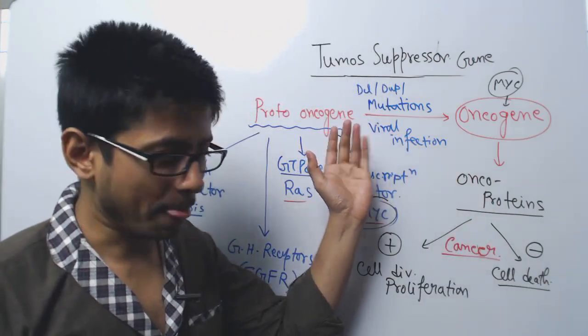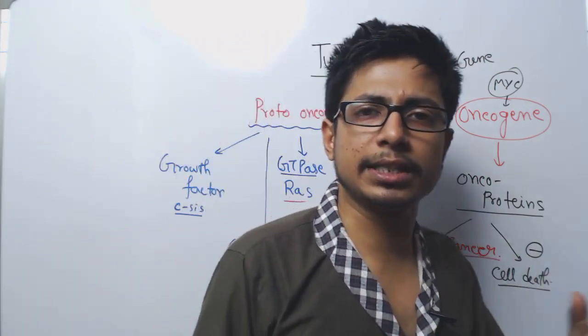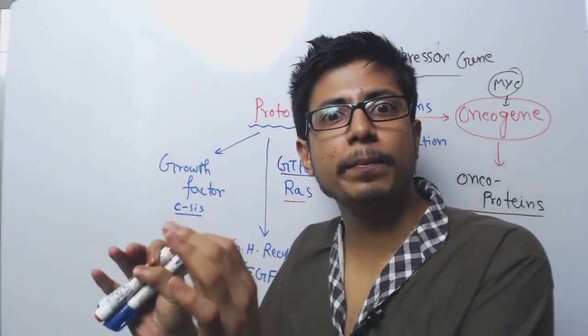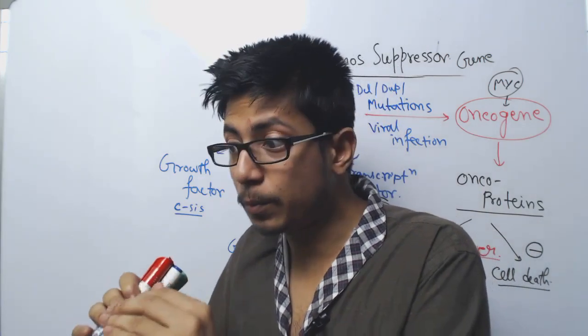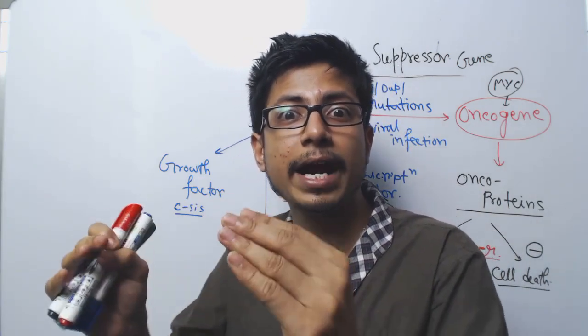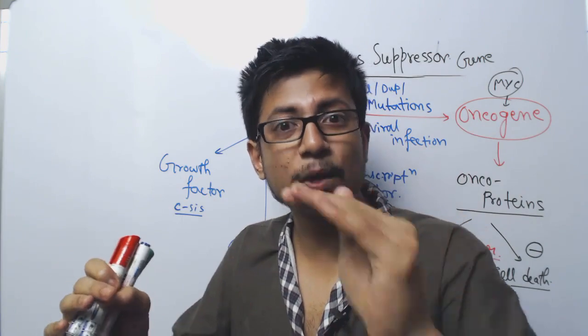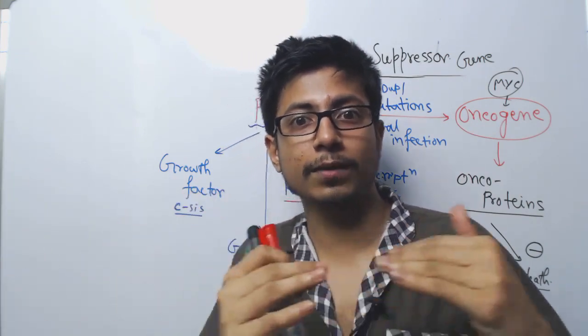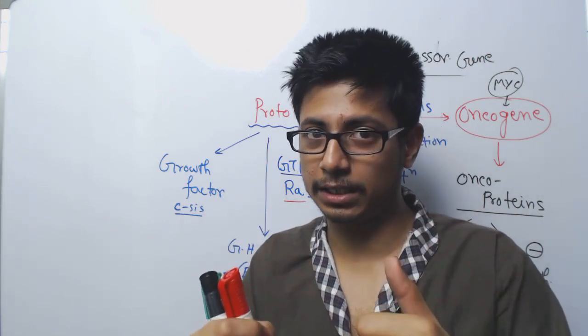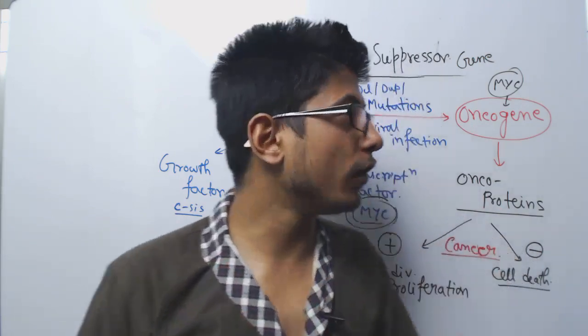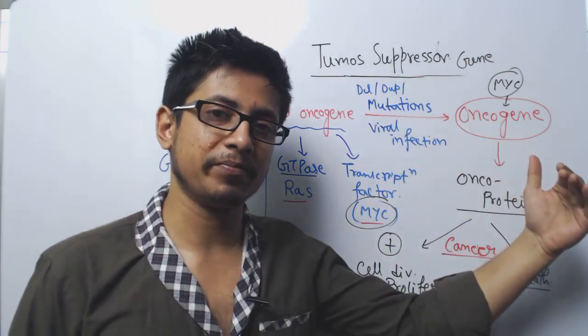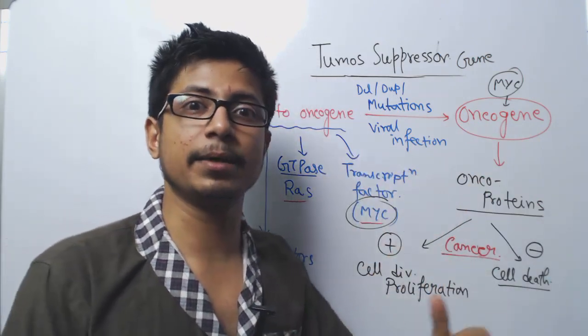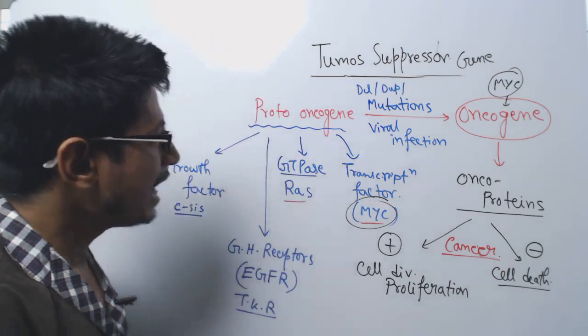Tumor suppressor genes suppress the development and growth of tumors. They do not allow the cell to grow and divide rapidly. They hold the division of the cell, hold the proliferation of the cell, and seize it. This is the functionality of tumor suppressor genes—regulating cell cycle pathways and cell proliferative pathways.